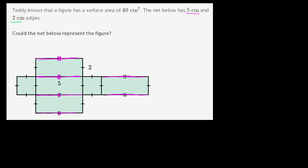Then we have several 2 centimeter edges. This one is 2 centimeters, and any other edge that has the same number of hash marks — in this case 1 — is also going to be 2 centimeters. So pretty much all the rest of the edges are going to be 2 centimeters.